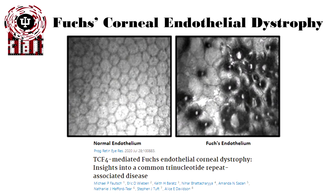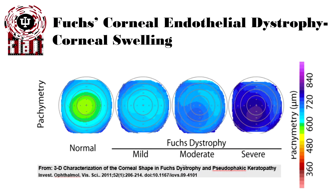If we lose an abnormal number of endothelial cells — which could be due to genetics or surgery — we have something called Fuchs Corneal Endothelial Dystrophy. When that occurs, we no longer have proper pump function, and so the cornea no longer stays hydrated to the proper level. The first thing that starts to happen is the cornea swells: we're not pumping out water, so more water rushes in and the cornea gets thicker.